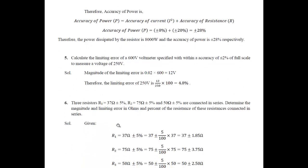Next problem: calculate the limiting error of a 600-volt voltmeter specified with an accuracy of plus or minus 2 percent of full scale, used to measure a voltage of 250 volts. The magnitude of limiting error is 0.02 multiplied by 600, which equals 12 volts. So the limiting error for the 250-volt reading is 12 divided by 250 into 100, which equals 4.8 percent. Remember to specify the given data in your solution.